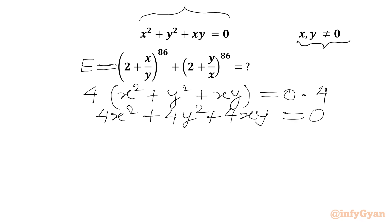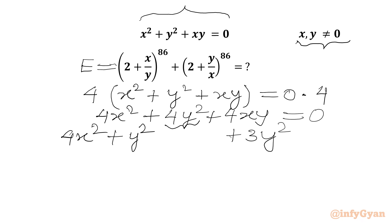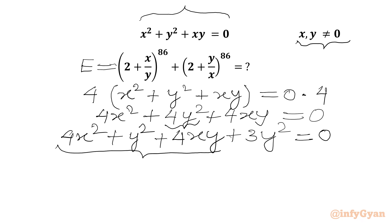Now we will split 4y². We can write 4x² + 4y² as 4x² + y² + 3y², so in total it is 4y². Then we have the last term 4xy, and the right-hand side is 0. Picking the first three terms altogether, we can say this is (2x + y)² + 3y² = 0.